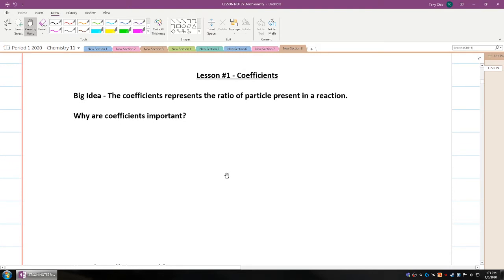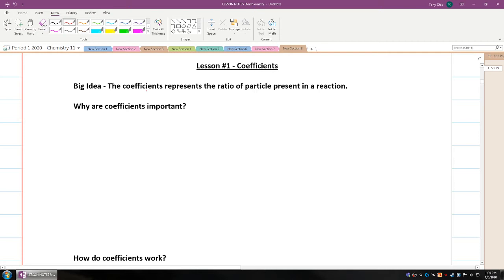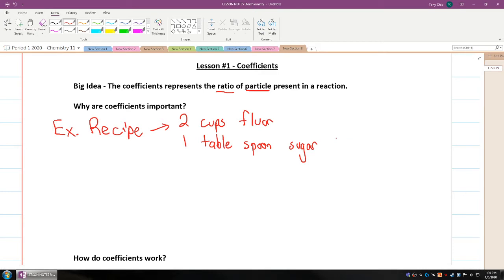Lesson number one is coefficients. Coefficients was a term you used in the previous unit when you used to balance all your chemicals. Now why is it important in stoichiometry? The big idea here is that coefficients represent the ratio of particles present in a reaction. Well let's think about it in terms of if you were baking and you had a recipe. The recipe asks that you add two cups of flour and one tablespoon of sugar. If you add too much flour, what can happen? If you add too little sugar, what will happen? So that is the ratio. Coefficients talk about ratio and that recipes is that case.